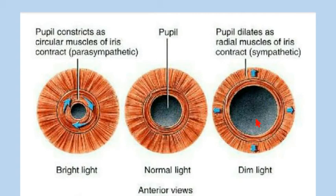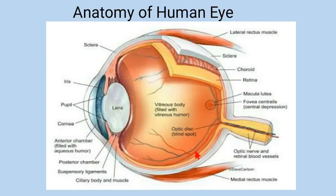The pupil dilates when a person is in dim light, so that the maximum amount of light enters the eye. In dim light, the circular muscles relax while the radial muscles contract. In normal light, enough light enters the eye so that the person can see under normal conditions.